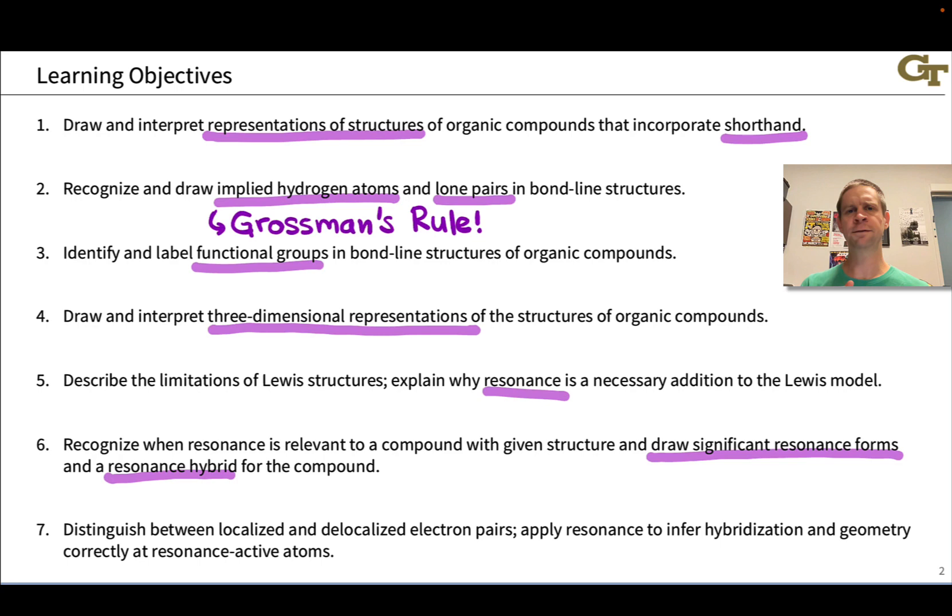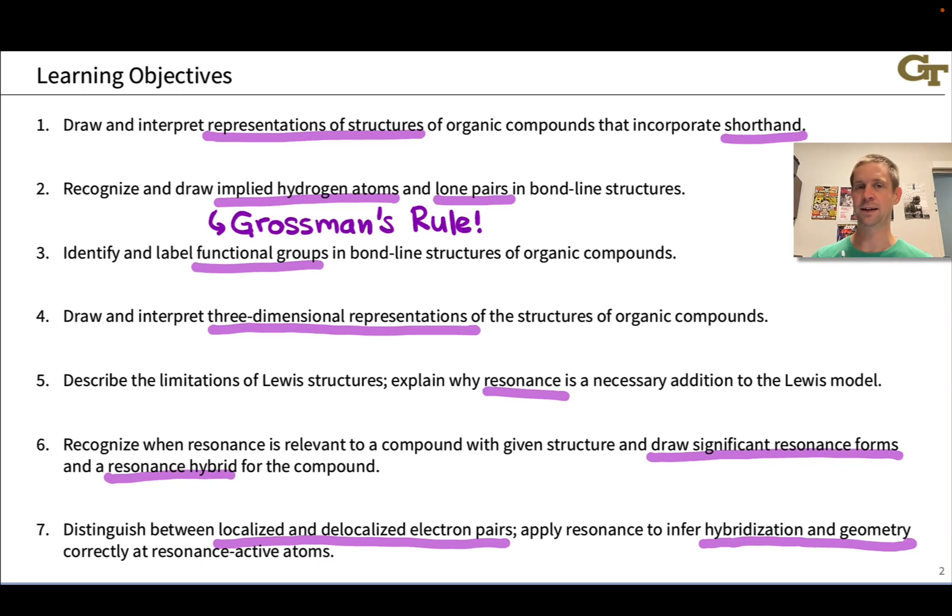And to close off this unit, we'll distinguish between localized lone pairs, which are well described by the Lewis model, and delocalized lone pairs that are engaged in resonance. You'll hear me refer to these as resonance active lone pairs. The electrons we're pushing around as we interconvert between resonance structures. Resonance has important structural implications, primarily related to hybridization, geometry, and bond length. And so where resonance is in play, these resonance active atoms and electron pairs, we need to deepen our understanding of hybridization and geometry beyond the introductory level to some degree, and we'll do that in this unit.